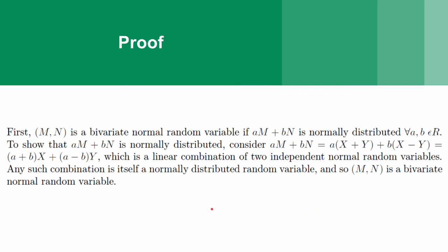First you have to know that m, n is a bivariate normal random variable exactly when am plus bn is normally distributed for all a, b, and r. We covered that a few slides back. So to show that am plus bn is normally distributed, we consider am plus bn.